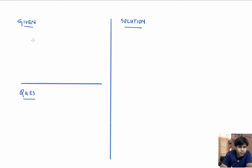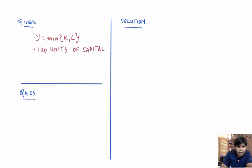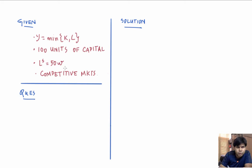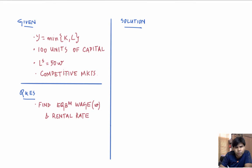We are given the following data: there is a production function y equals minimum(K, L), there are 100 units of capital available in this economy, the labor supply function is 50w, and we are assuming that all markets are competitive — the labor market, capital market, as well as the market for output. The question is: given this data, what will be the equilibrium wage and rental rates? I'm going to denote wage by w and rental rate by r.